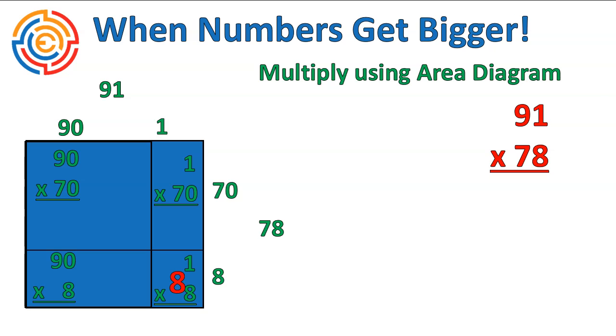1 times 8 is 8. Notice that's what I would have put right here. 1 times 8 or 8 times 1. 9 times 8 is 72, or 90 times 8 is 720.